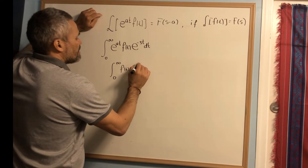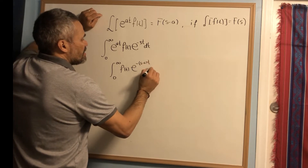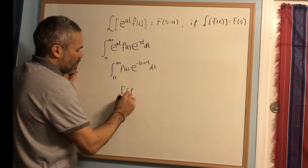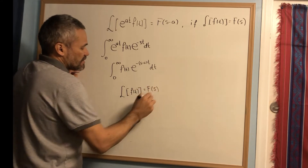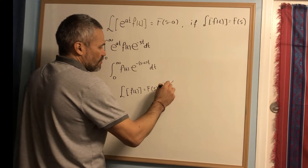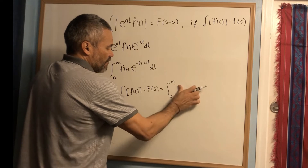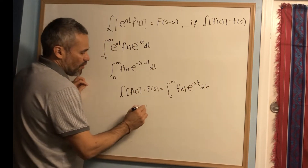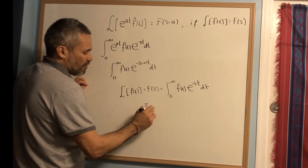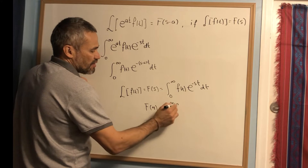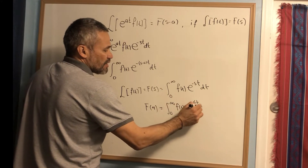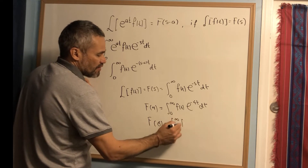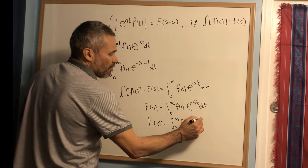If we define the Laplace transform of f(t) to be F(s), then by definition this is the integral from zero to infinity of f(t) times e^(-st) dt. So for example, F(4) would be the integral from zero to infinity of f(t) e^(-4t) dt, and F(apple) would be the integral of f(t) e^(-apple·t) dt.